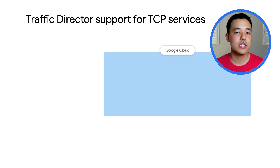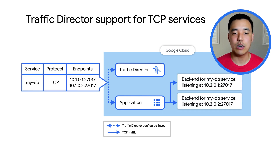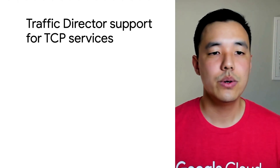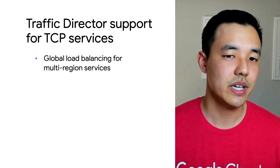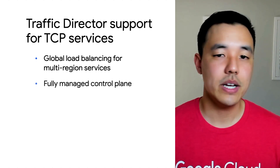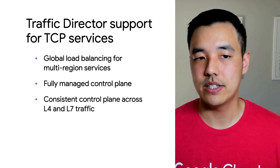Now that we covered our load balancers, let's cover two new additions to Traffic Director, our fully managed traffic control plane for service mesh. Introducing TCP services support for Traffic Director. This feature enables you to use Traffic Director to route traffic to services that expect non-HTTP traffic, such as databases or voice over IP services. Those of you who have TCP-based services get global load balancing for multi-region services, such as cross-regional failover and overflow, a fully managed control plane for TCP traffic, and a consistent control plane across L4 and L7 traffic.